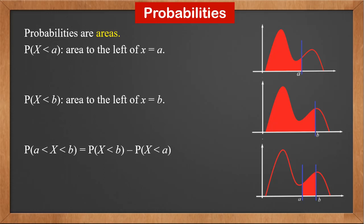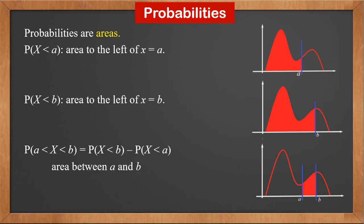The probability of x between a and b is the probability of x less than b minus the probability of x less than a. It's the area between a and b.